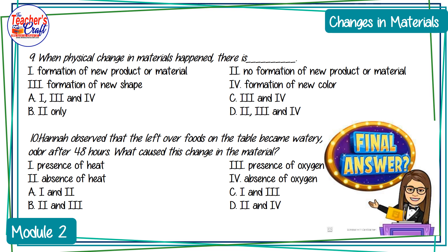Number nine: when physical change in materials happened, there is blank. One — formation of new product or material; two — no formation of new product or material; three — formation of new shape; or four — formation of new color. Letter A: one, three, and four; B: two only; C: three and four; D: two, three, and four.